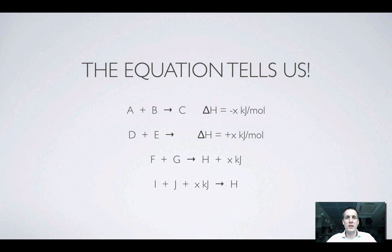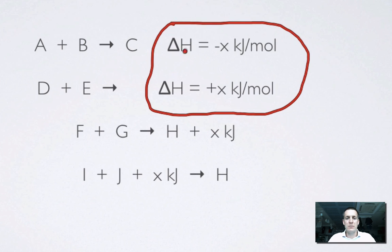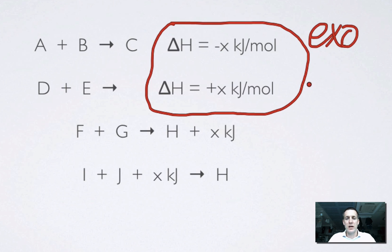We're going to start off with equations where the information is actually there, right in front of us in the equation. Sometimes this will happen in the way that they will point out what the enthalpy change is directly, by stating the enthalpy change and then putting some number. If the enthalpy change is negative, then we should be aware that that means we've got an exothermic reaction. If it's positive, it means we've got an endothermic reaction.